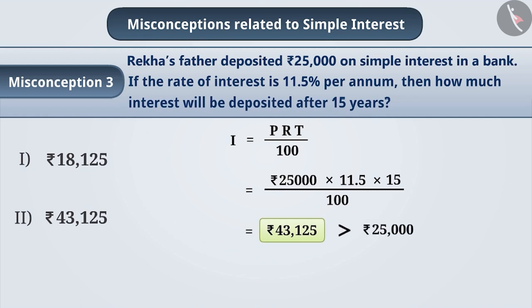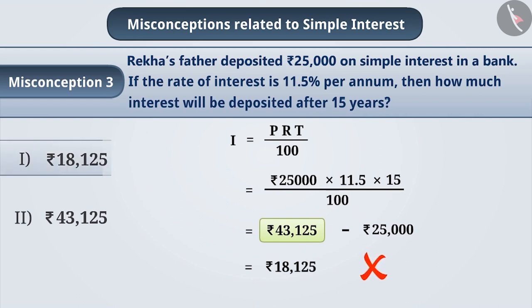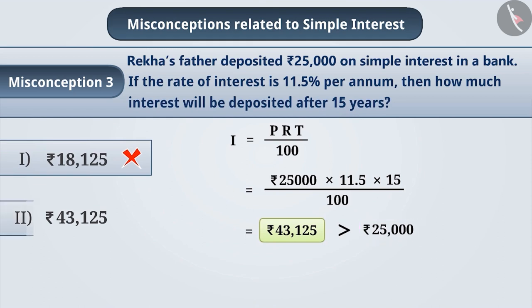Here, simple interest is more than the principal. Usually, students misunderstand that interest can never be more than the principal. Therefore, they try to subtract principal from simple interest and get Rs. 18,125, which is incorrect. Since the rate of interest and time are more in this situation, interest can be more than the principal. Hence, option 2 is the correct answer.